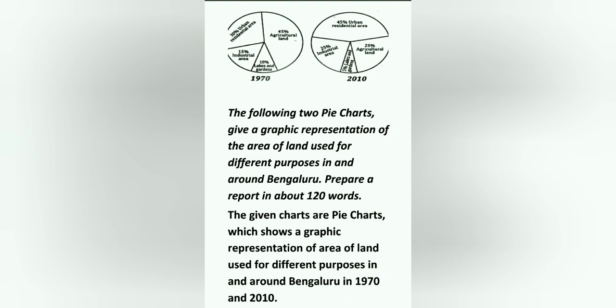This is the way you get the question. The question reads: 'The following two pie charts give a graphic representation of the area of land used for different purposes in and around Bengaluru. Prepare a report in about 120 words.' This is for 5 marks.